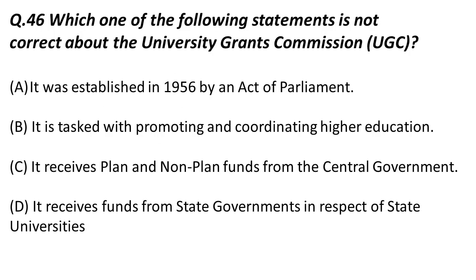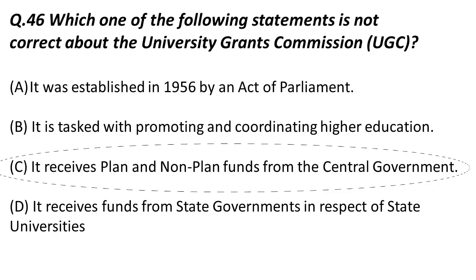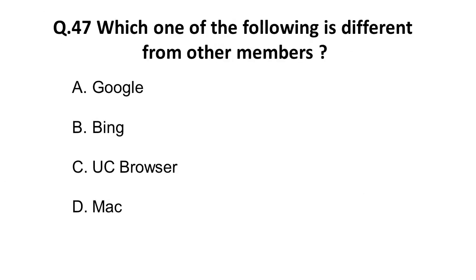The next question: which of the following statements is not correct about the University Grants Commission? The statements are: A) it was established in 1956 by Act of Parliament — correct; B) it is tasked with promoting and coordinating higher education — correct; C) it receives plan and non-plan funds from the central government — this is the wrong statement. The correct answer identifies C as incorrect.